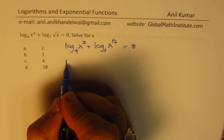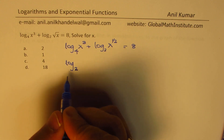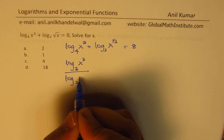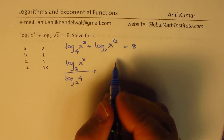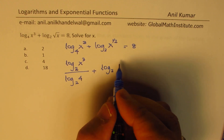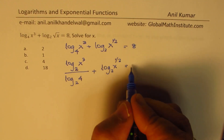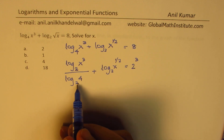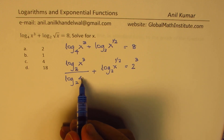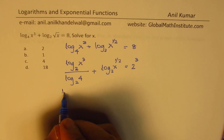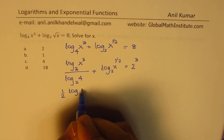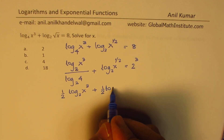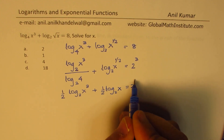We'll change the base to 2. We can write this as log to the base 2 of x cubed divided by log to the base 2 of 4, plus log to the base 2 of x to the power of one-half, and the right-hand side can be written as 2 cubed. Log to the base 2 of 4 is 2, since 4 is 2 squared, so we get one-half log to the base 2 of x cubed, plus one-half log to the base 2 of x, equals 2 to the power of 3.